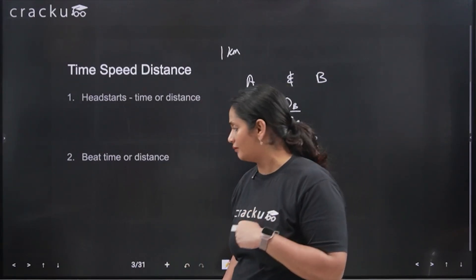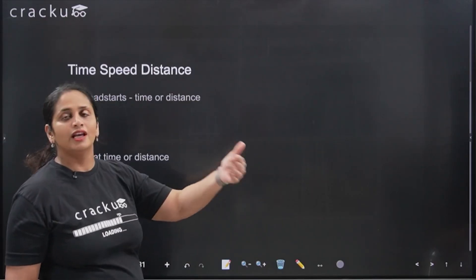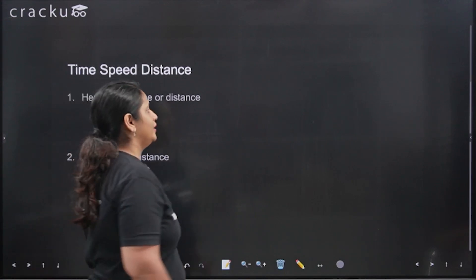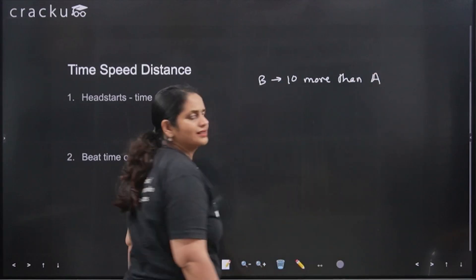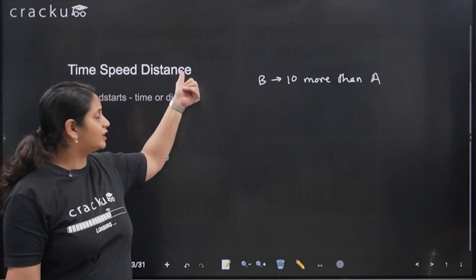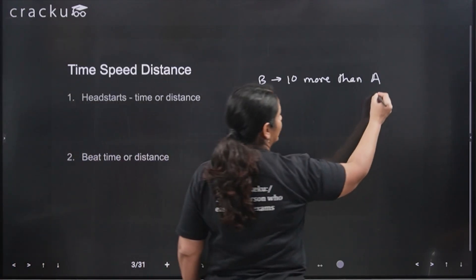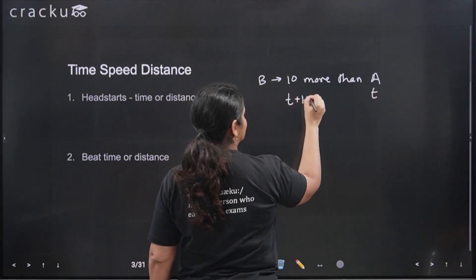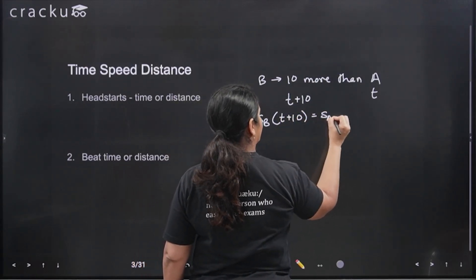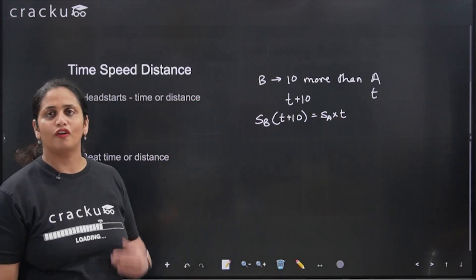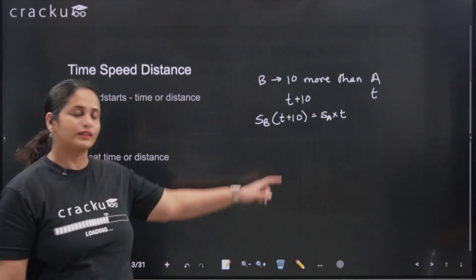Now suppose instead of a distance head start, a time head start is given. Instead of saying go 100 meters ahead, I say I'll give you 10 seconds — you start 10 seconds before me. That means B runs for 10 seconds more than A. If they reach the finish line at the same time, the distance is the same but the time is different — so this becomes a constant distance problem. Speed of B times (t + 10) equals speed of A times t. Head start in distance → constant time; head start in time → constant distance.